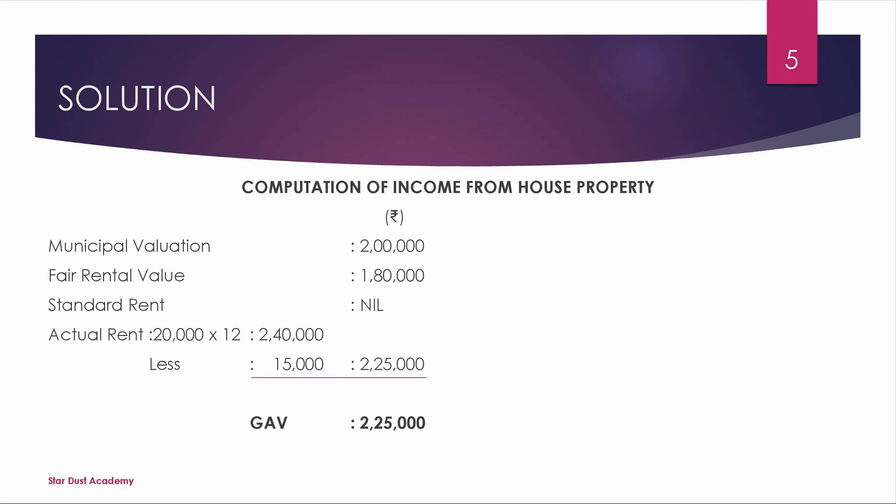Now let's look at the gross annual value calculation. The gross annual value is calculated using: municipal valuation, fair rent value, standard rent, and actual rent. Municipal valuation is 2,00,000. Fair rent value is 1,80,000. Standard rent is not given. Actual rent is 20,000 per month, so 20,000 × 12 = 2,40,000.